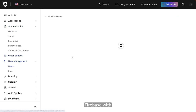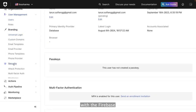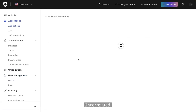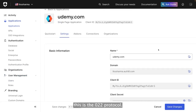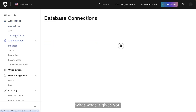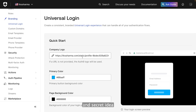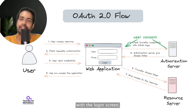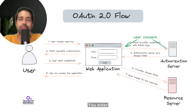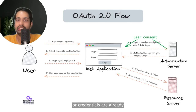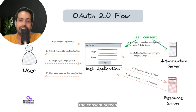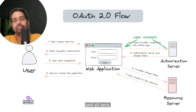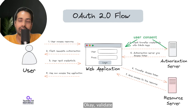Let's look at what the Auth0 flow looks like. If you've done login with Firebase, Google, or Facebook, you can correlate with this. Auth0 follows the OAuth 2.0 protocol. Once you integrate an Auth0 client ID and secret ID into your client application — a React app, Angular app, Next.js, or SvelteKit app — when you click login, you are presented with the Auth0 login screen. You are not building anything; you get the Auth0 login screen. You enter username and password, and if your credentials are already stored in Auth0, Auth0 presents you the consent screen.